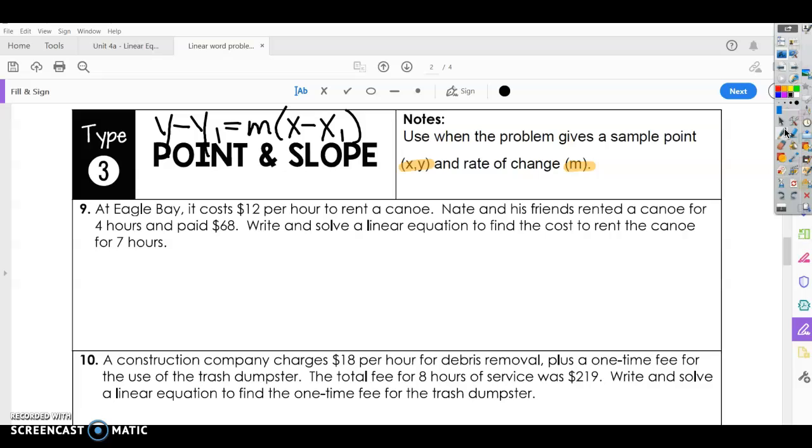At Eagle Bay, it costs $12 per hour. Per hour means that's our rate of change. It costs $12 per hour to rent a canoe. Nate and his friends rented a canoe for four hours and paid $68. So four hours, $68. The cost depends on the number of hours. So hours is your independent variable. How much you paid is your dependent variable. So we can say that our slope is the $12 per hour and our point is 4 and $68.